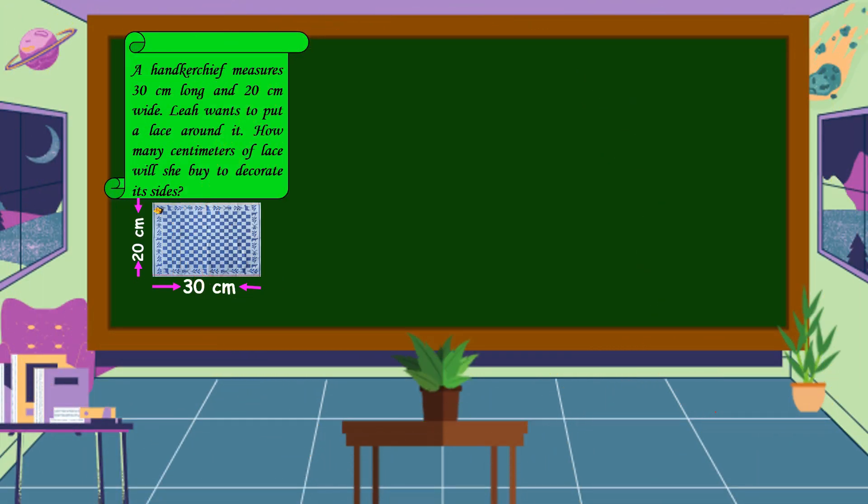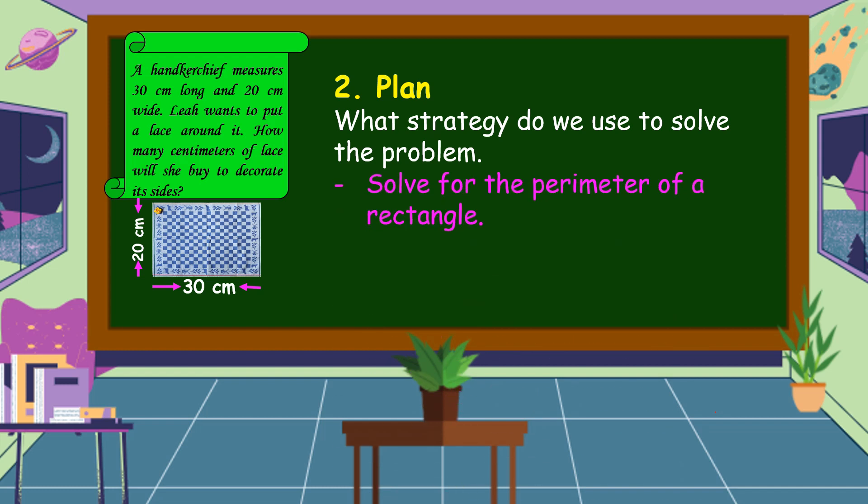After we understand the problem, the next step is we're going to make a plan. What strategy do we use to solve the problem? In this problem, we're going to solve for the perimeter of a rectangle. What is the formula? The formula in finding the perimeter of a rectangle is P = 2L + 2W where L is the length and W is the width.